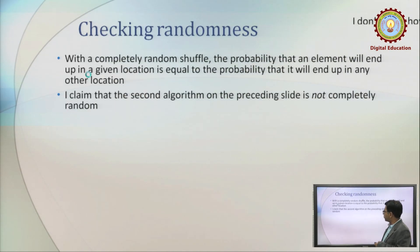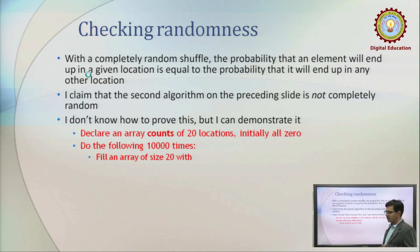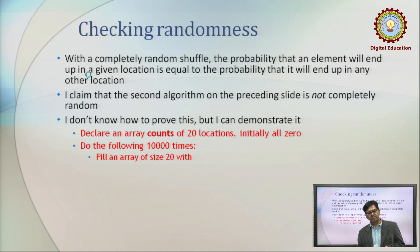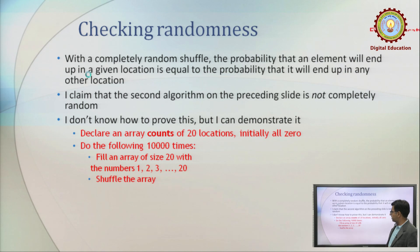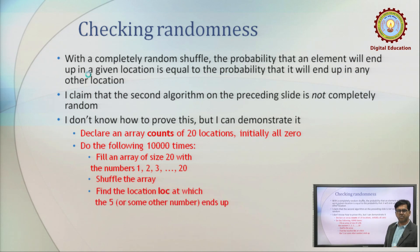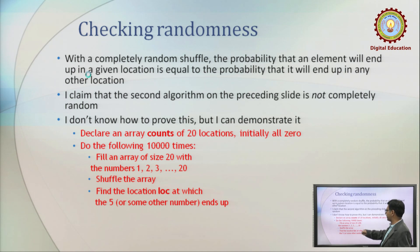A basic question that may arise is how to check randomness. There are a number of statistical tests used to check randomness. The simplest method that can be understood easily is: declare an array count of 20 locations and do the following a thousand times — fill an array of size 20 with numbers 1 through 20.